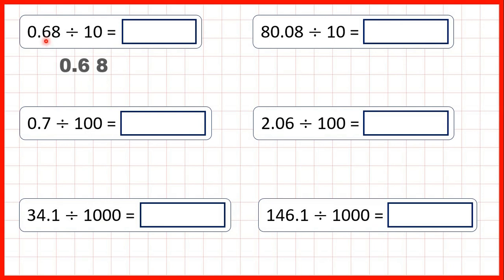We write out our decimal — here we have 0.68 — and copy down the decimal point. Now we're dividing, so digits are going to move to the right to make the number smaller. Dividing by 10 means digits are moving one square to the right, and the way to remember that is that the number 10 has one zero.